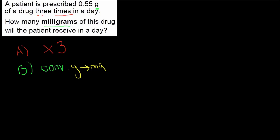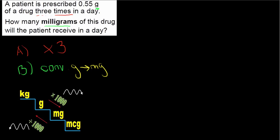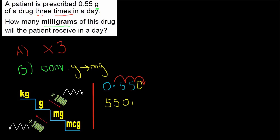It doesn't matter which order I do the two steps. Because I have the awkward number 0.55, I'd rather do the conversion first. Going from grams to milligrams means going down the unit stairs, so I move the decimal three places to the right. Starting with 0.55 grams and moving the decimal one, two, three places to the right, with one empty space for a zero, gives 550 milligrams.